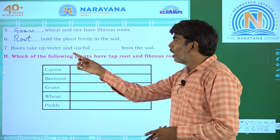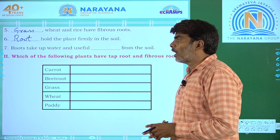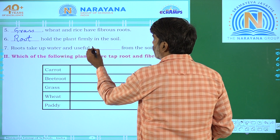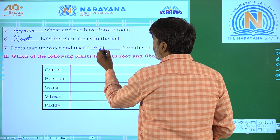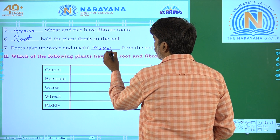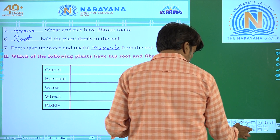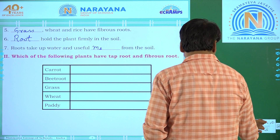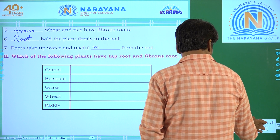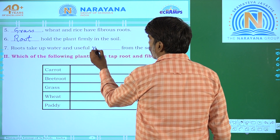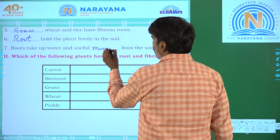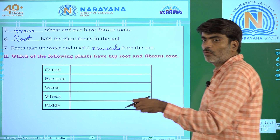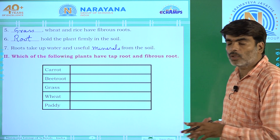Seventh question: Roots take up water and useful minerals. Plants not only require water, they also require minerals. Minerals are also needed for the plant to grow, apart from water. From where does the plant get these minerals? From the soil — the root will absorb the minerals and water and supply them to the plant.